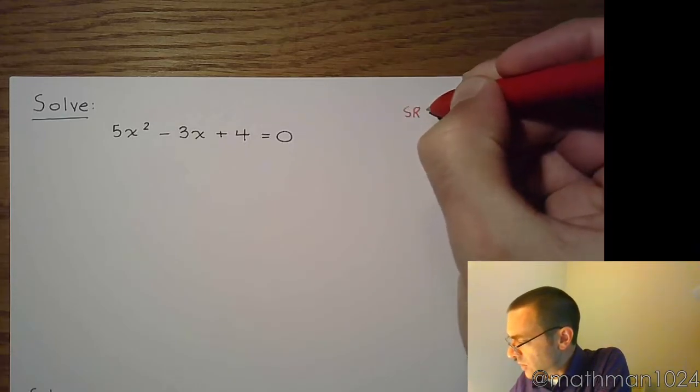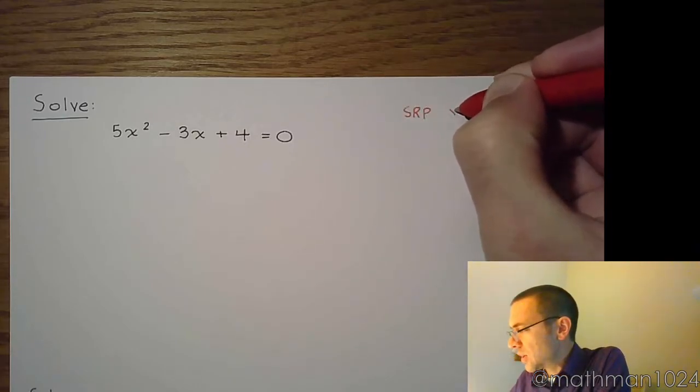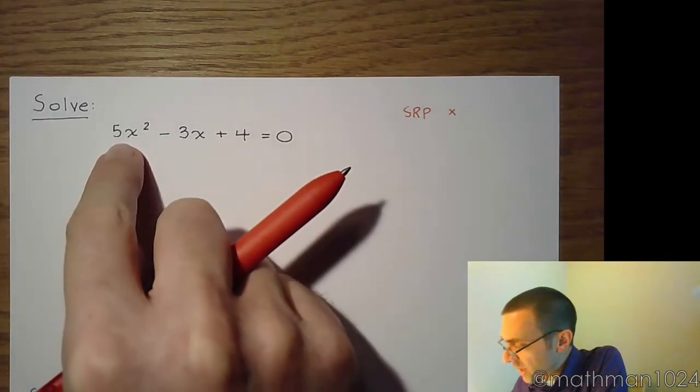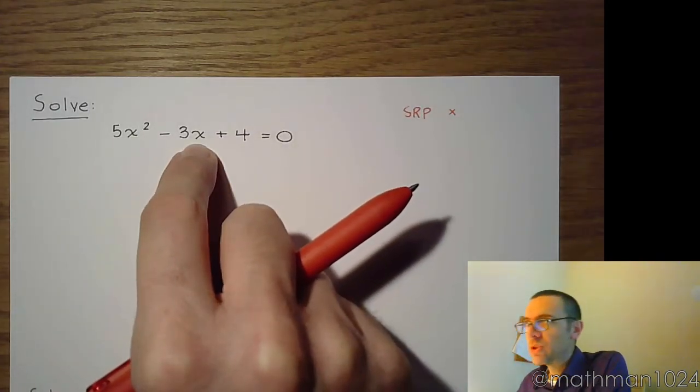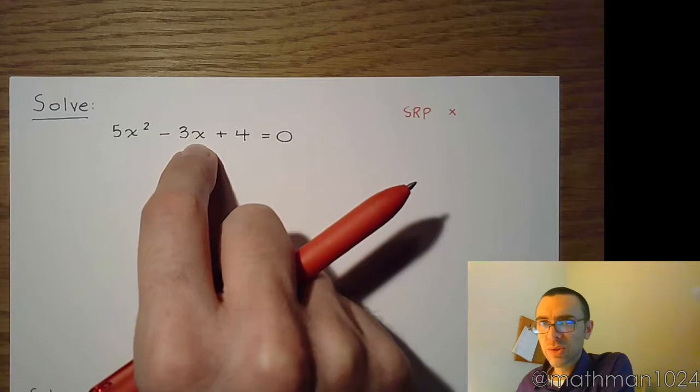So let's go through our progression and make sure we are solving this the most efficient way possible. First, you would try to see if you can use the square root property, but the answer here is no, because you have x squared and x, so you have too many variable terms to use the square root property.